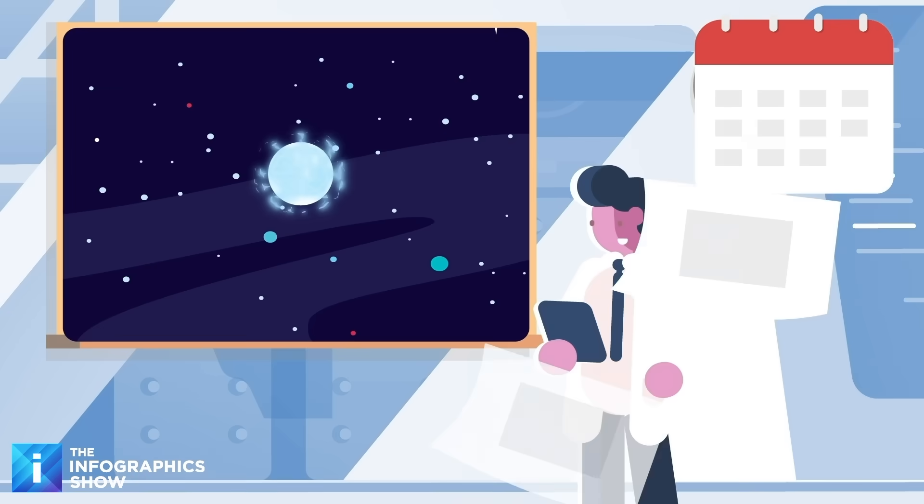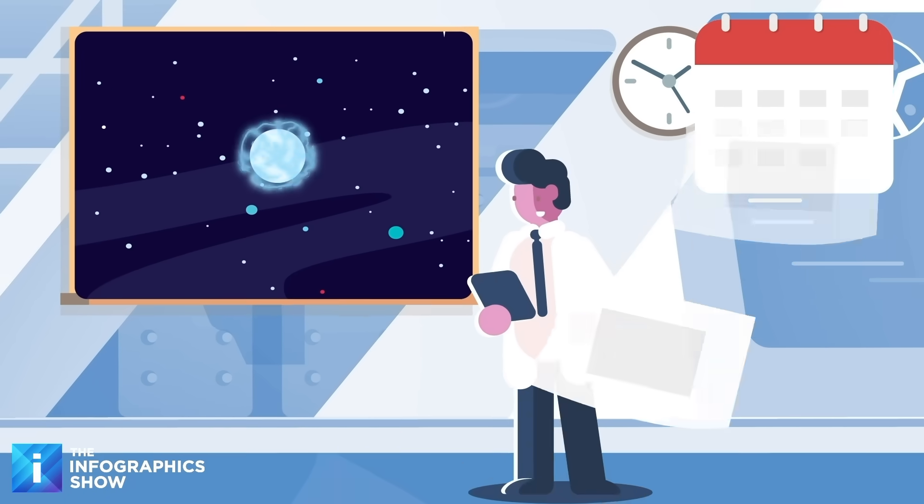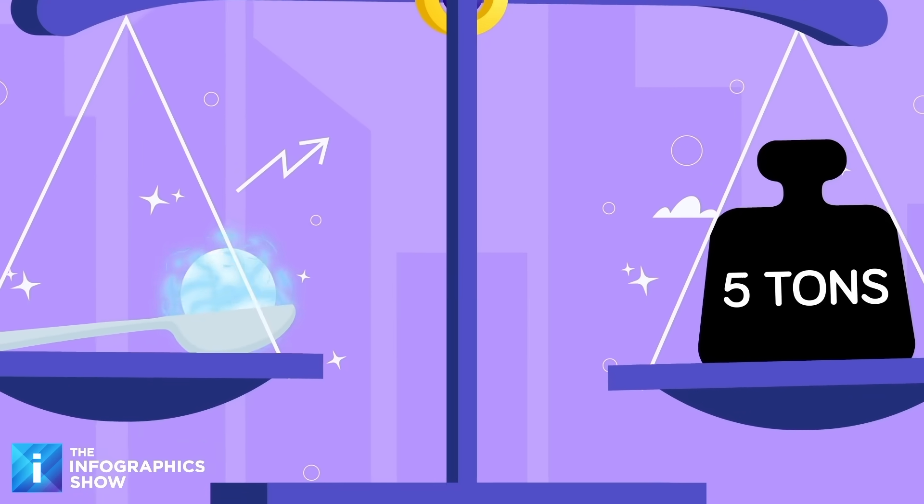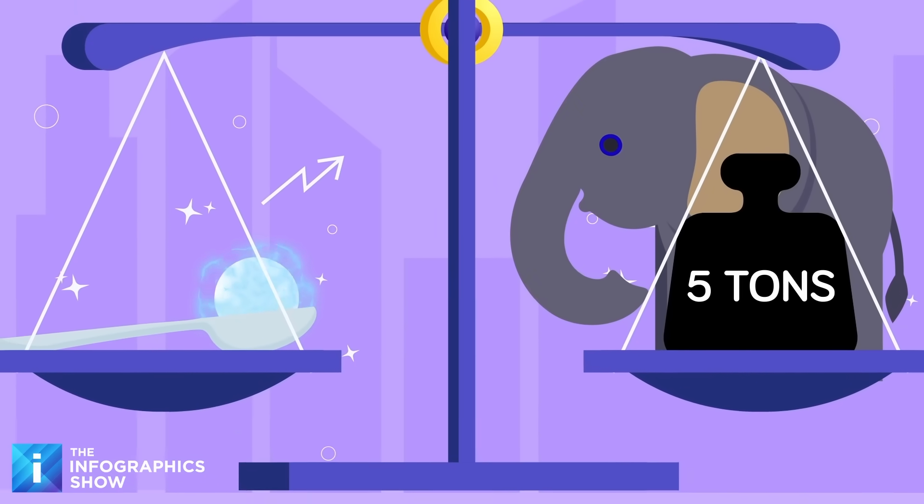Now when we say dense, you really wouldn't want a bit to hit you in the head. As ridiculous as it sounds, just a teaspoon of white dwarf matter could weigh over 5 tons, about the weight of an elephant. Space is weird.